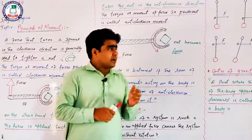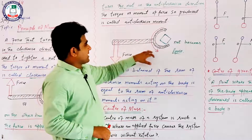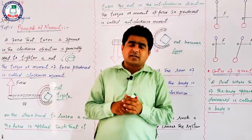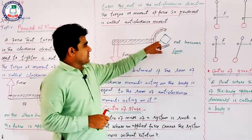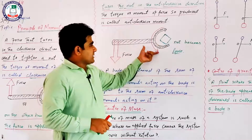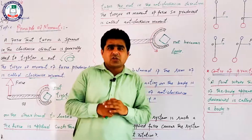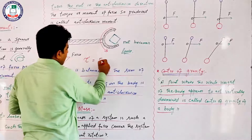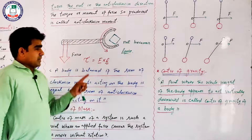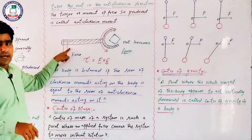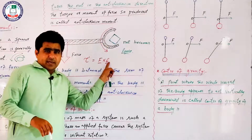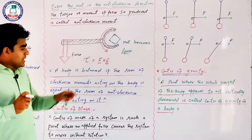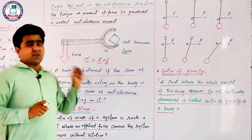Question यह है कि हम nut को loose करना चाहते हैं लेकिन spinner से loose नहीं हो रहा — जितना भी force लगाएं नहीं हो रहा। Torque के formula के अनुसार τ = F × L। या तो force increase करें — जो हम नहीं कर सकते — या फिर longer spinner लें जिसकी length ज़्यादा हो।